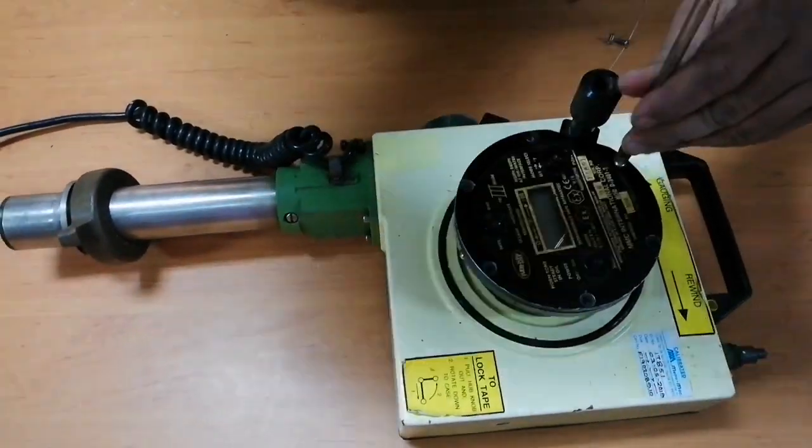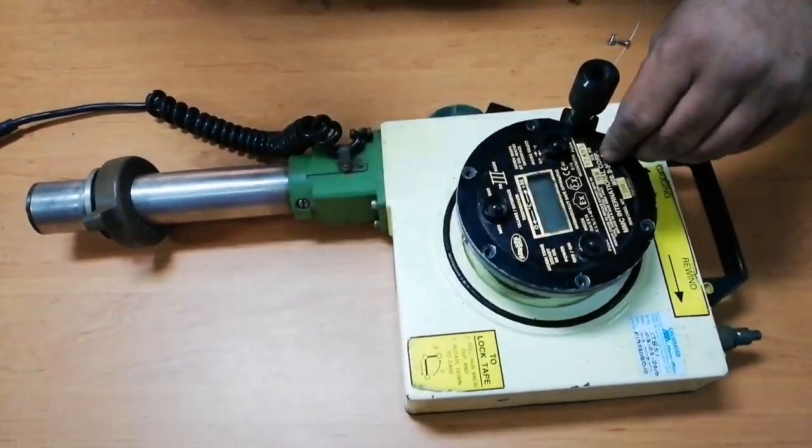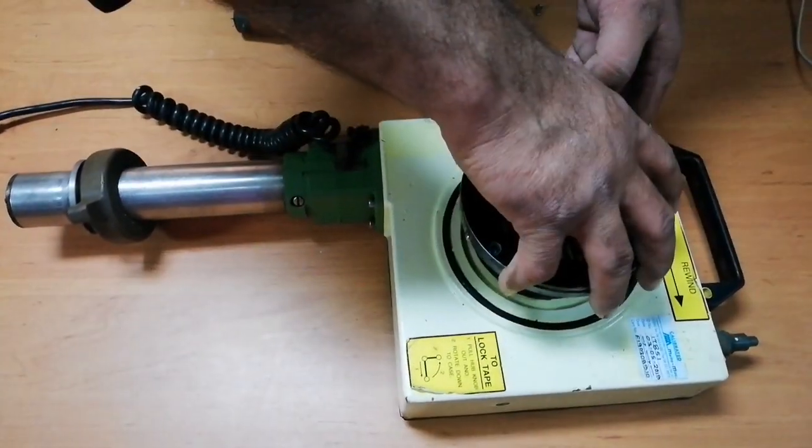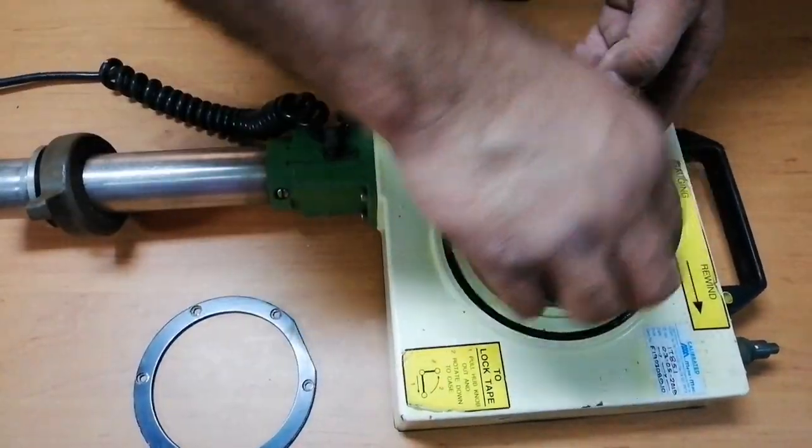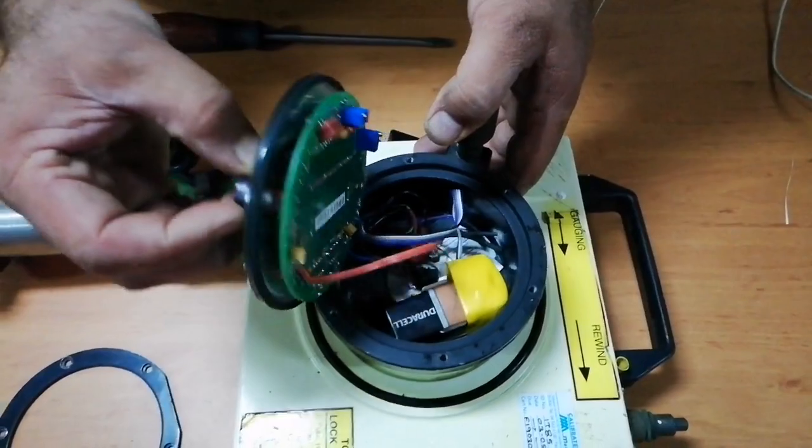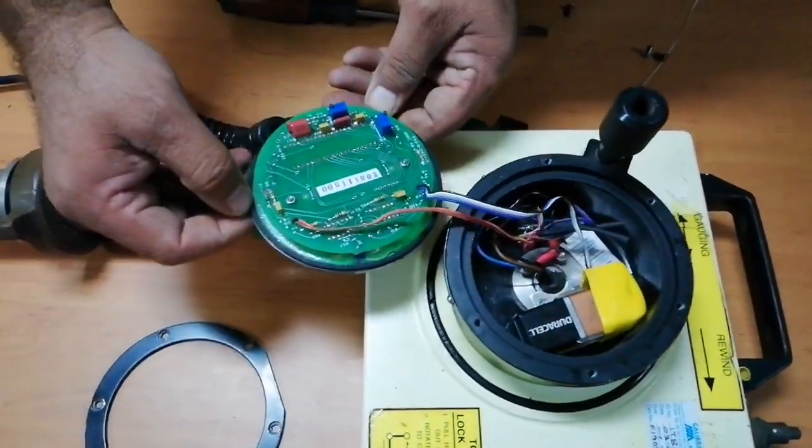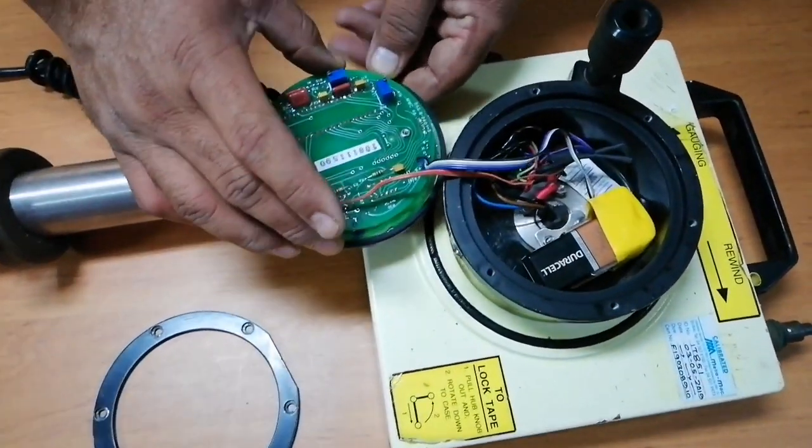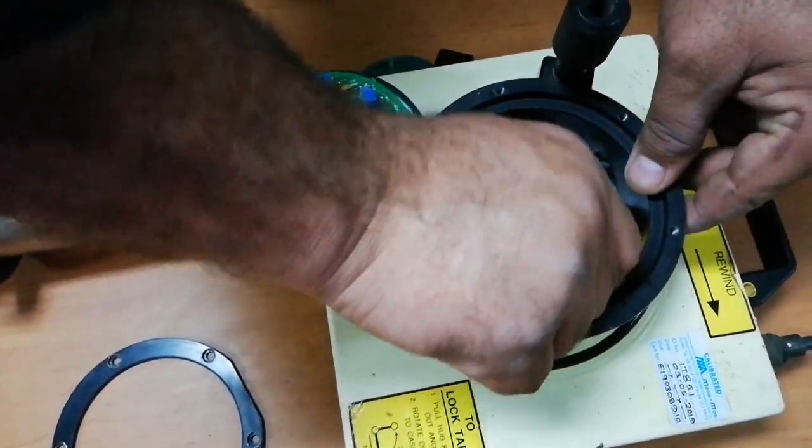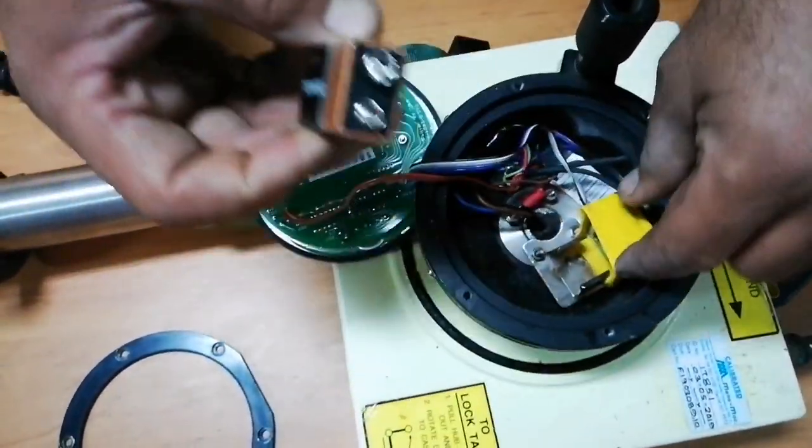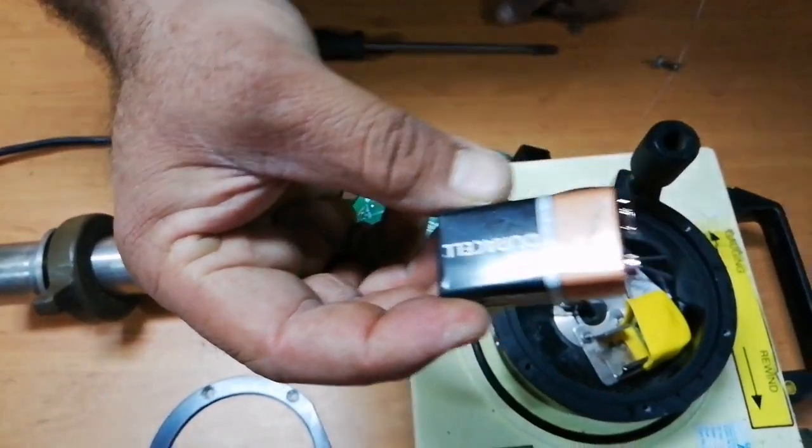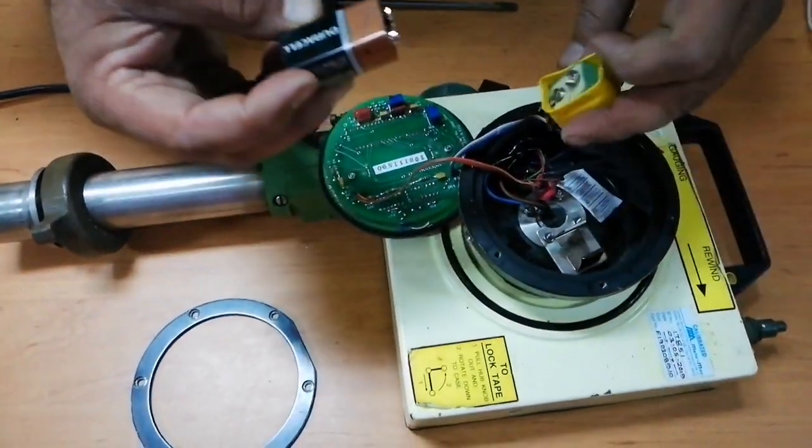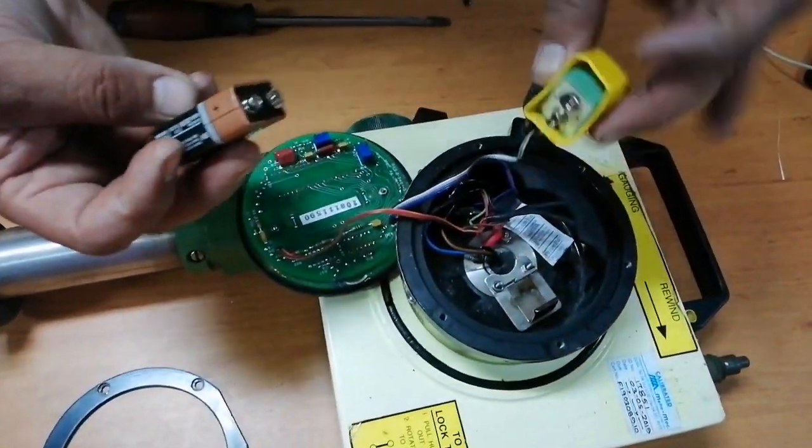Okay, we are almost done. I have unscrewed all the bolts from the panel. I'm going to remove this panel. This is the circuit, and you can see this yellow cap. This is the 9-volt battery. So if we need to change the battery, we can replace it with a new battery and clip it to this yellow head.